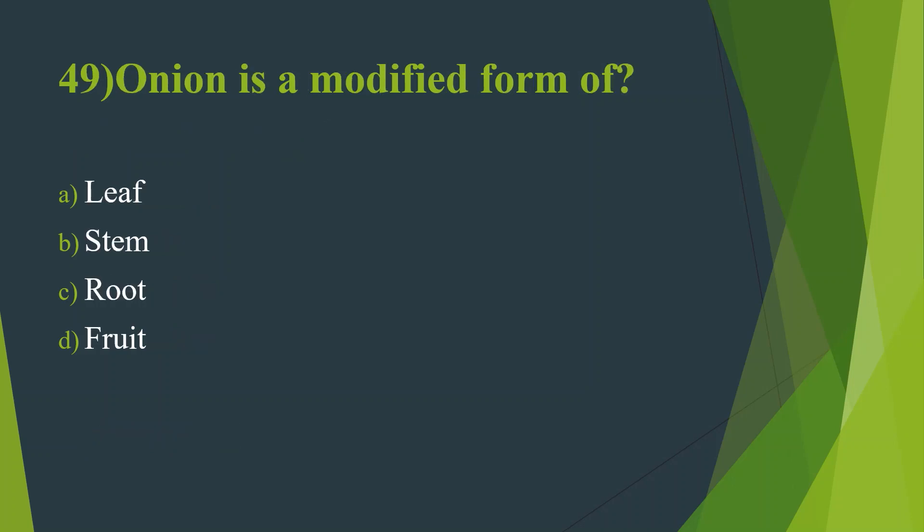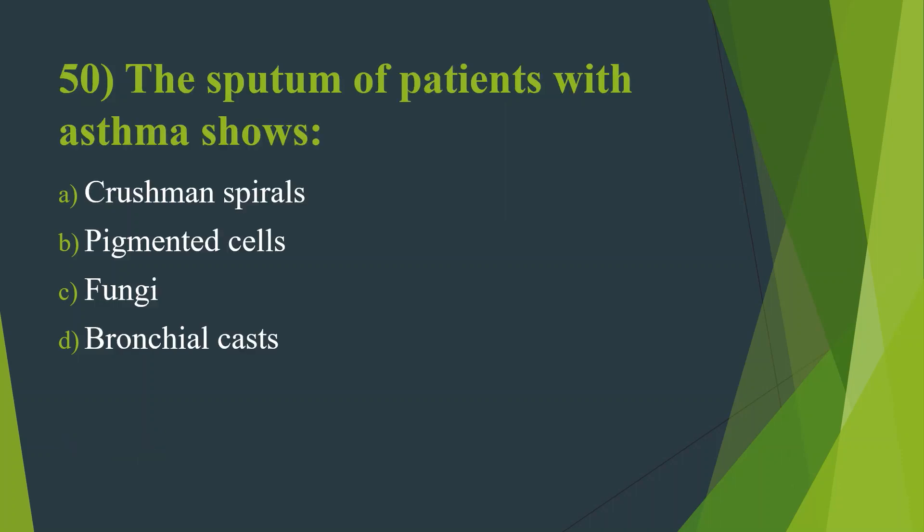Forty-ninth question: Onion is a modified form of — Option A, Leaf. Option B, Stem. Option C, Root. Option D, Fruit. Answer is Option B, Stem.